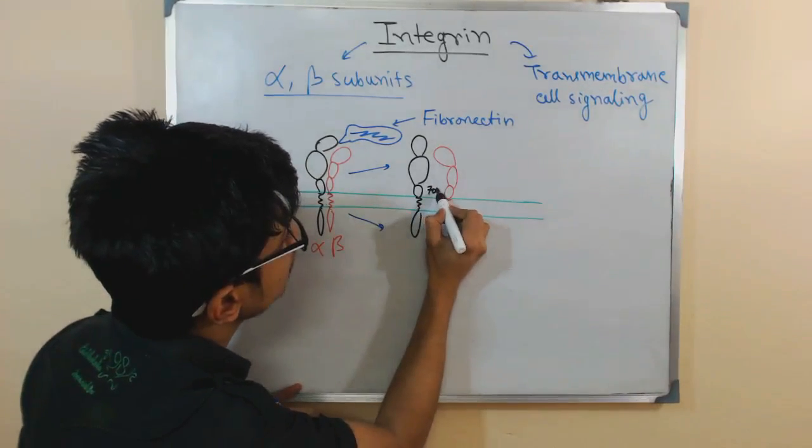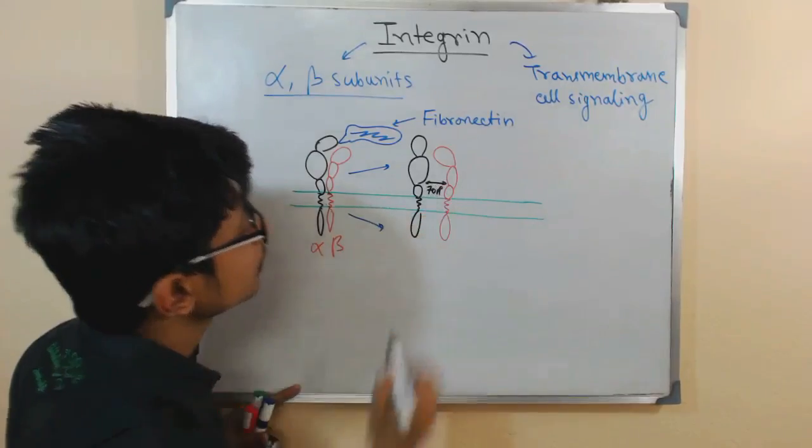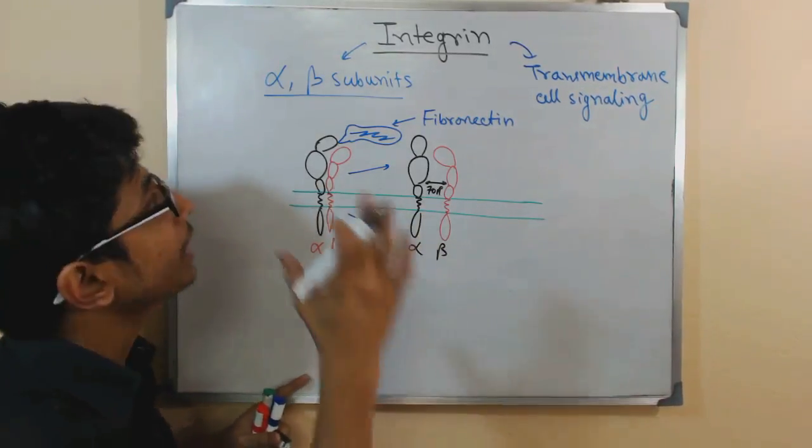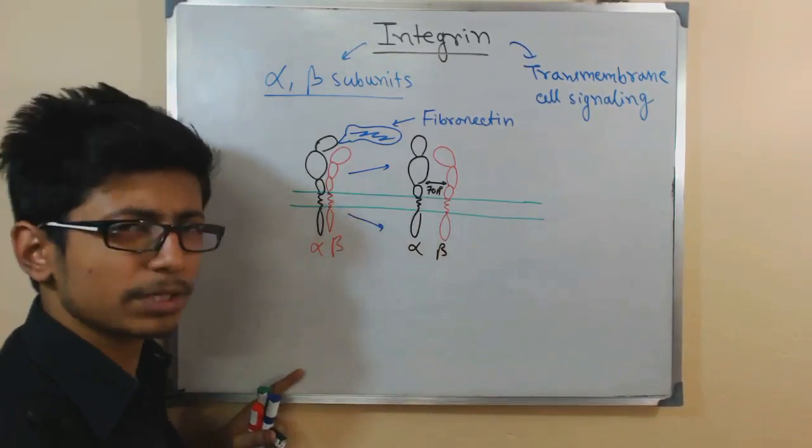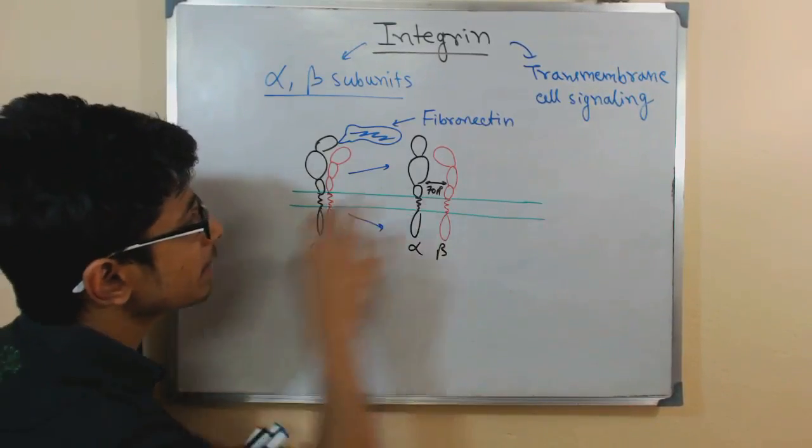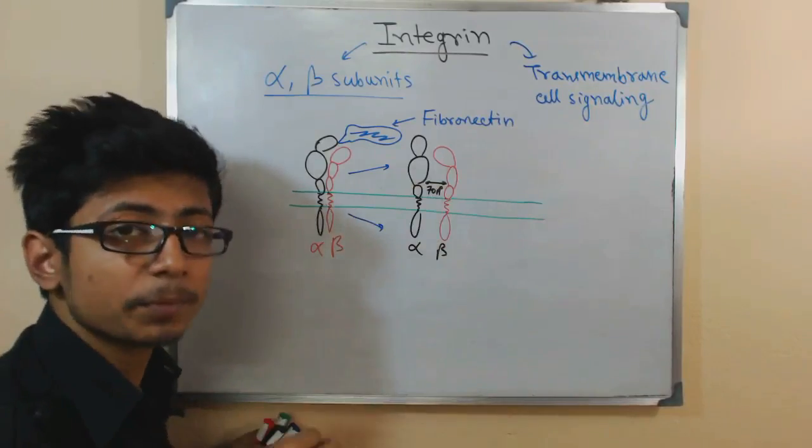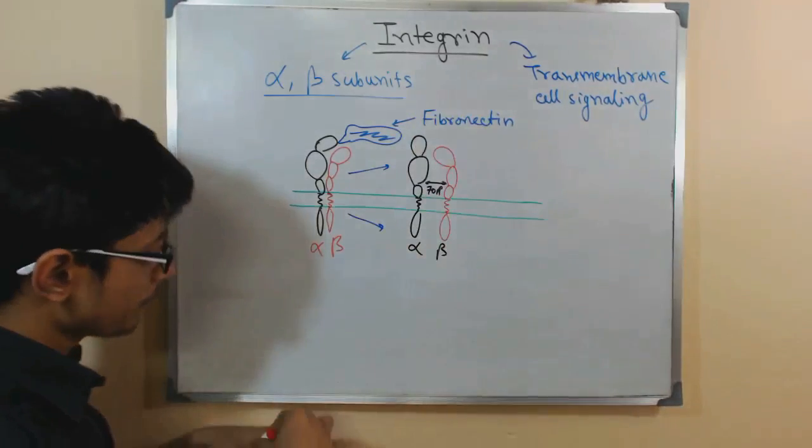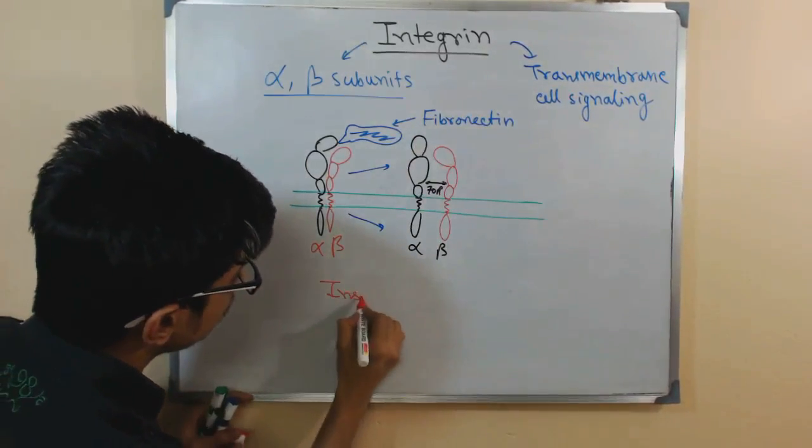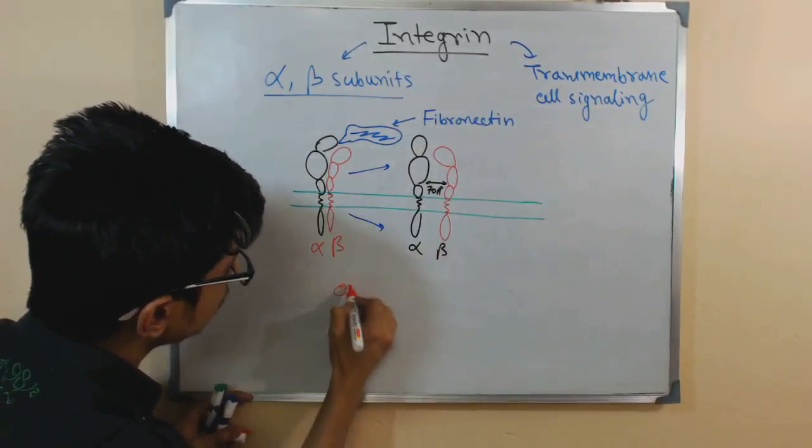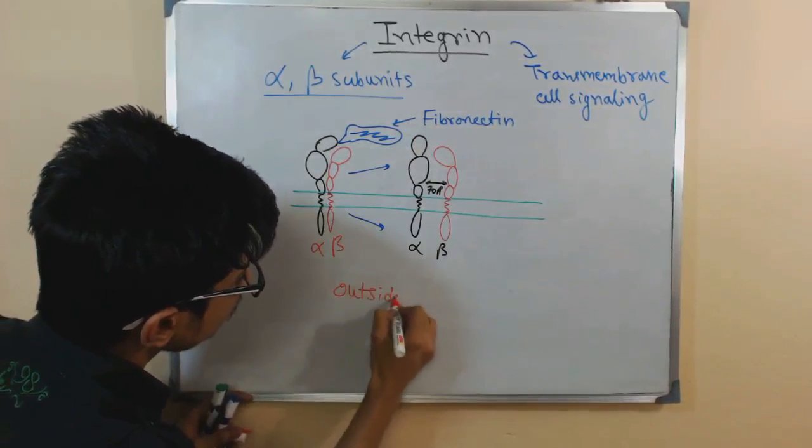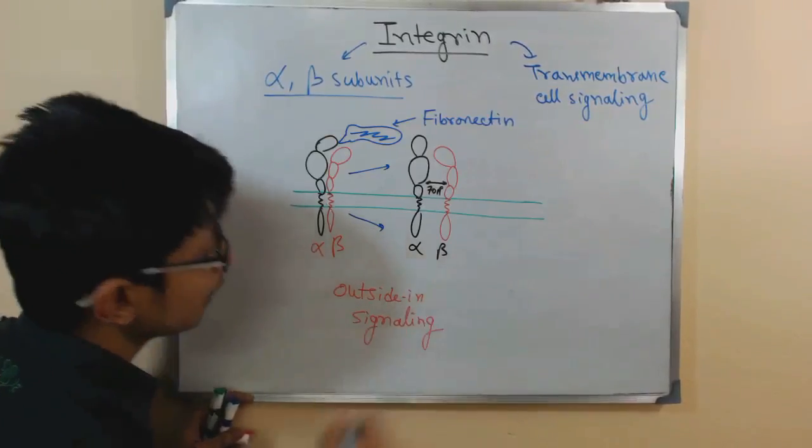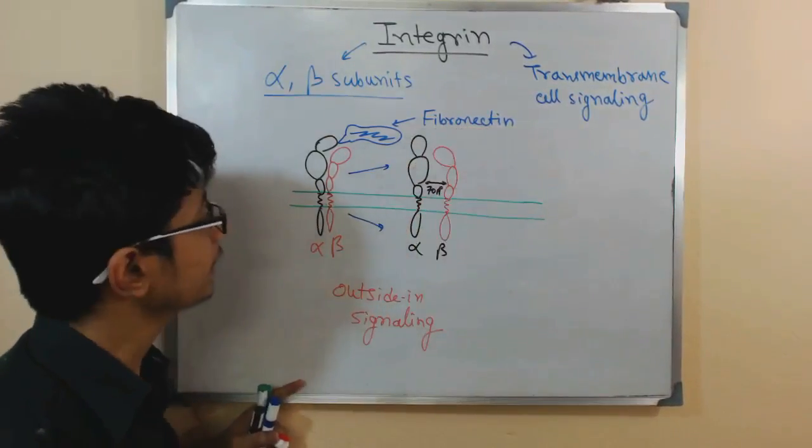That is 70 angstrom between these two alpha and beta integrin. The difference will be 70 angstrom. It was observed that this separation triggers the cell signaling process inside because the ligand bound to outside. And that's called the outside-in signaling, outside-in signaling due to the binding of fibronectin.